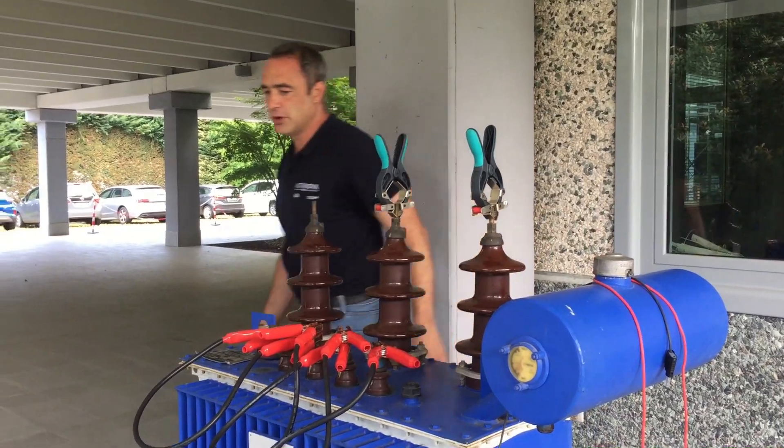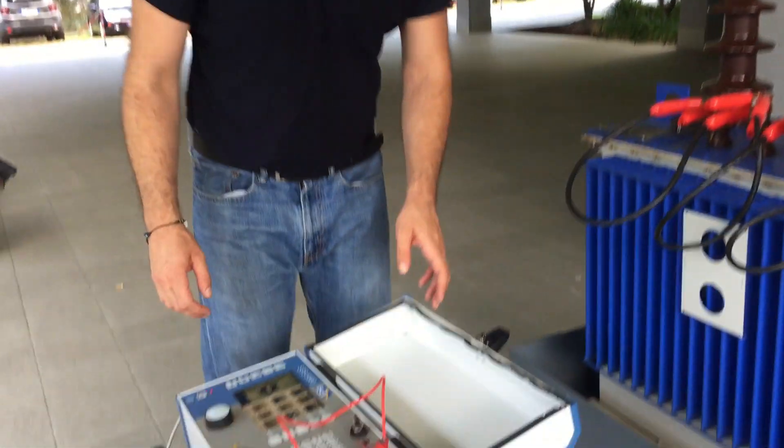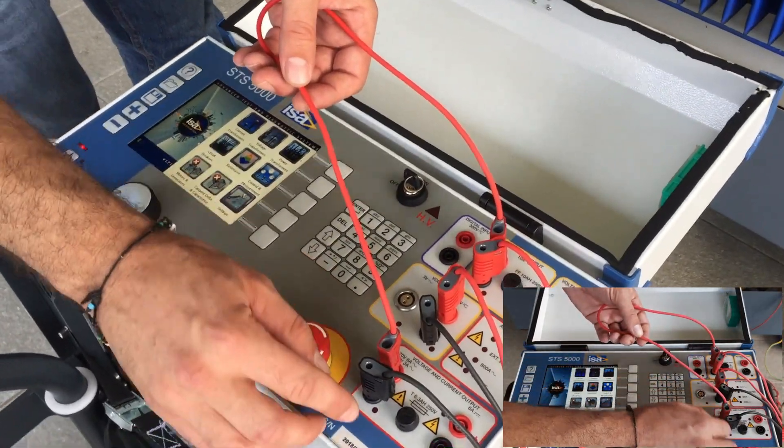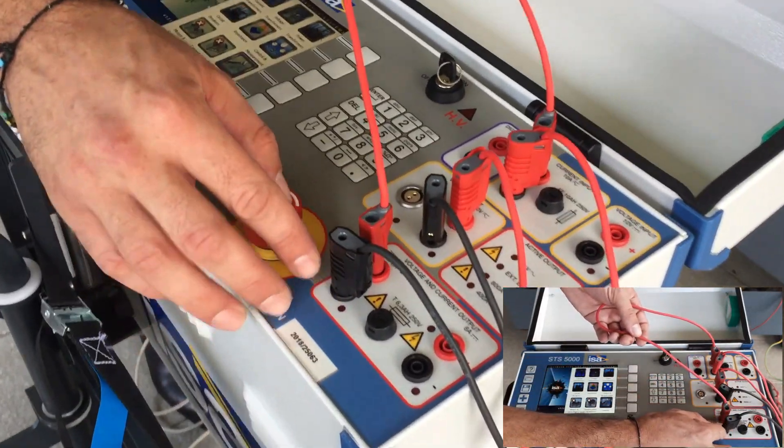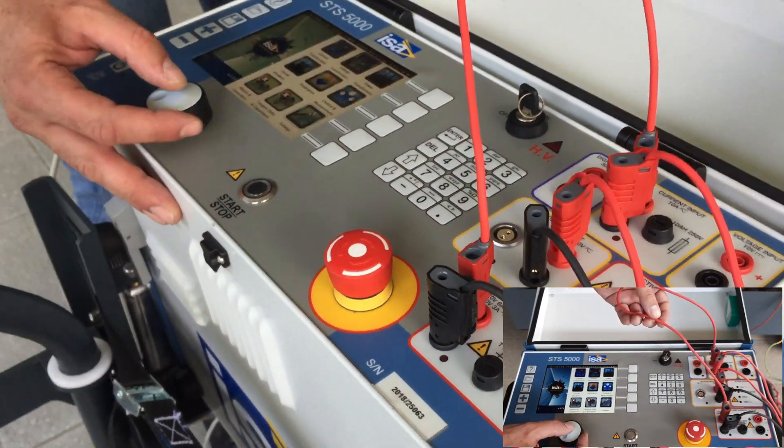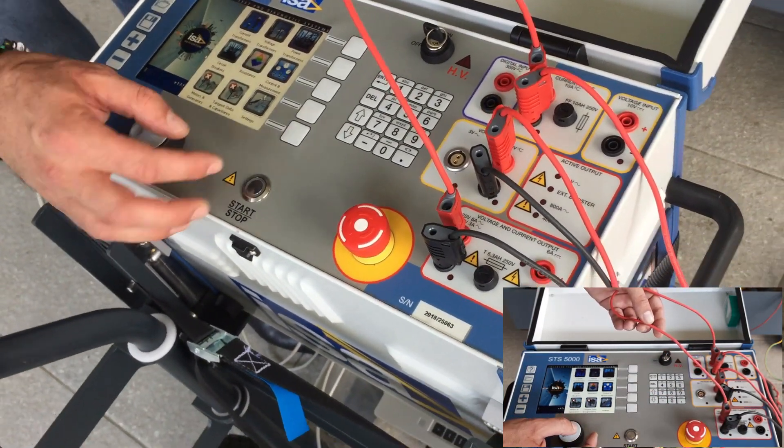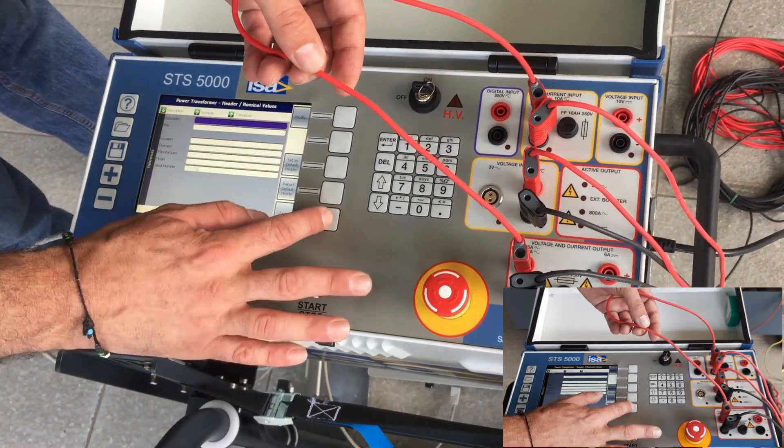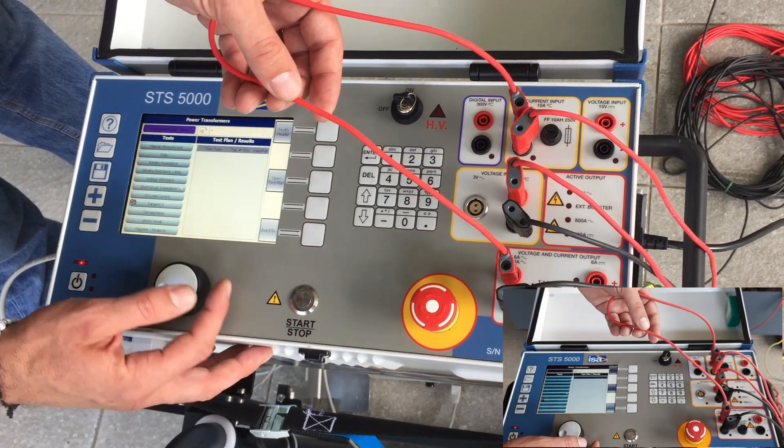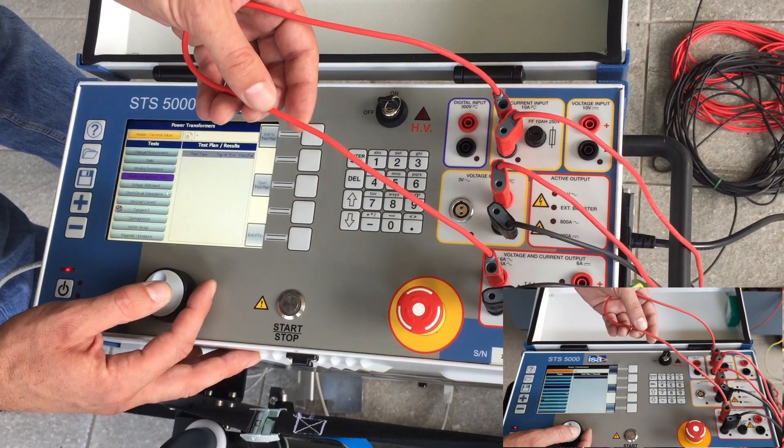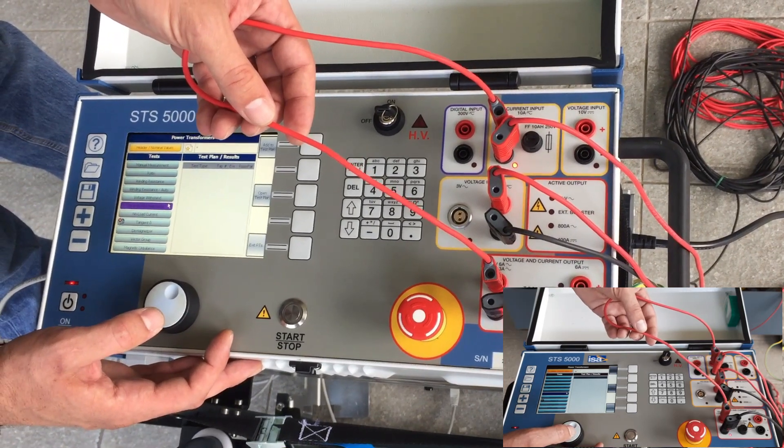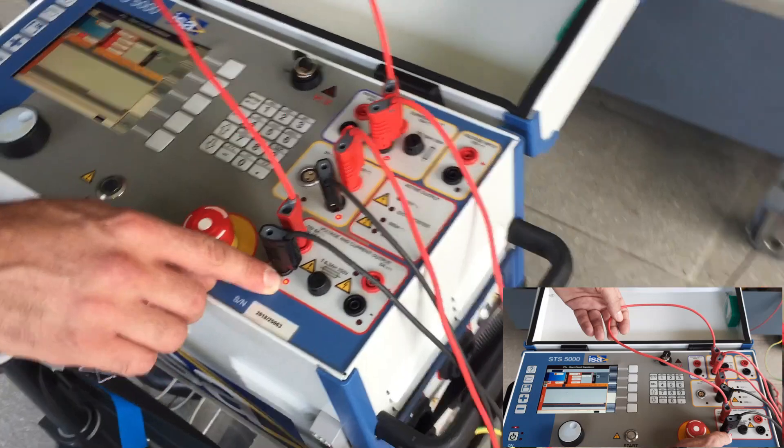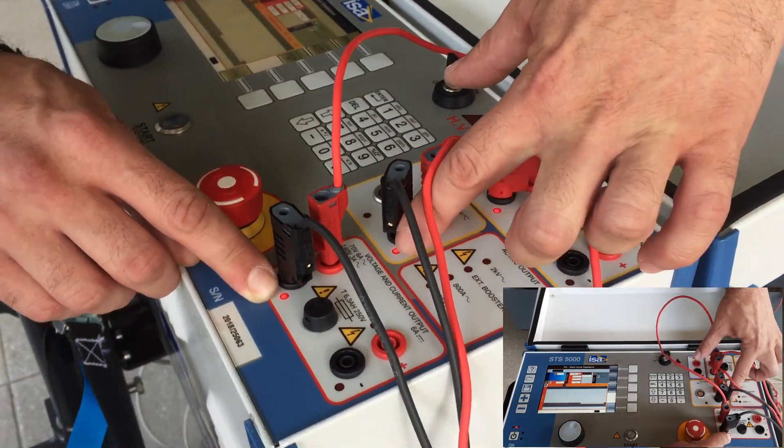First of all, since I have prepared before, I'm gonna repeat what I did. We will use this output here, the 140 volt output. I'm gonna say to STS that I want to do a short circuit test and it will light up the LEDs next to the inputs and outputs I need to use. So what you can see is this output, this output is used and these two inputs are used.